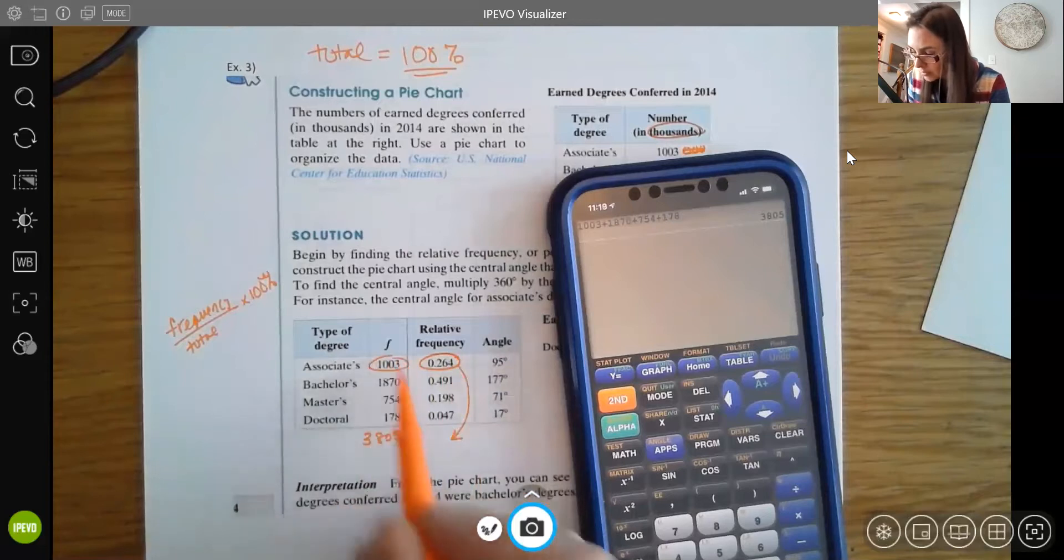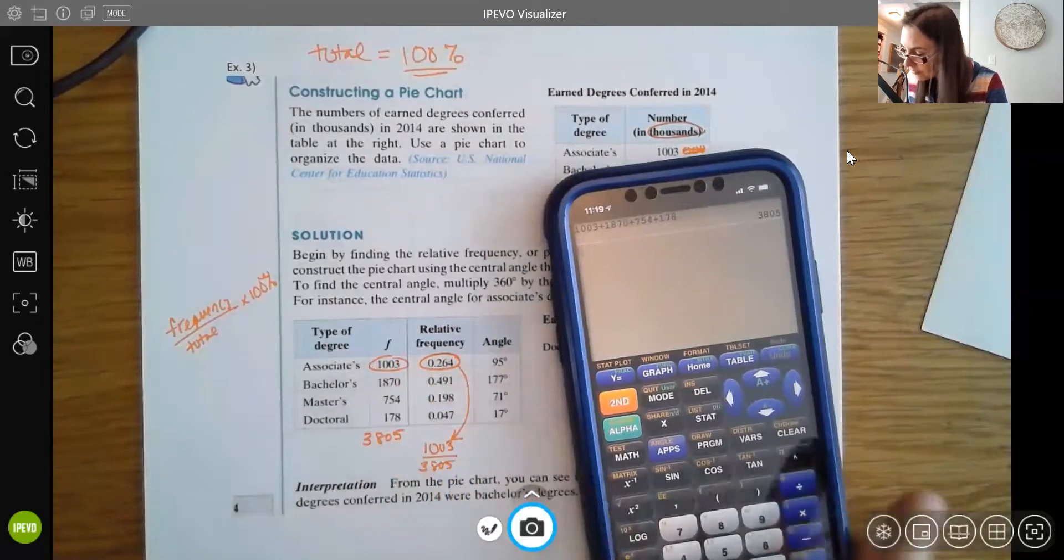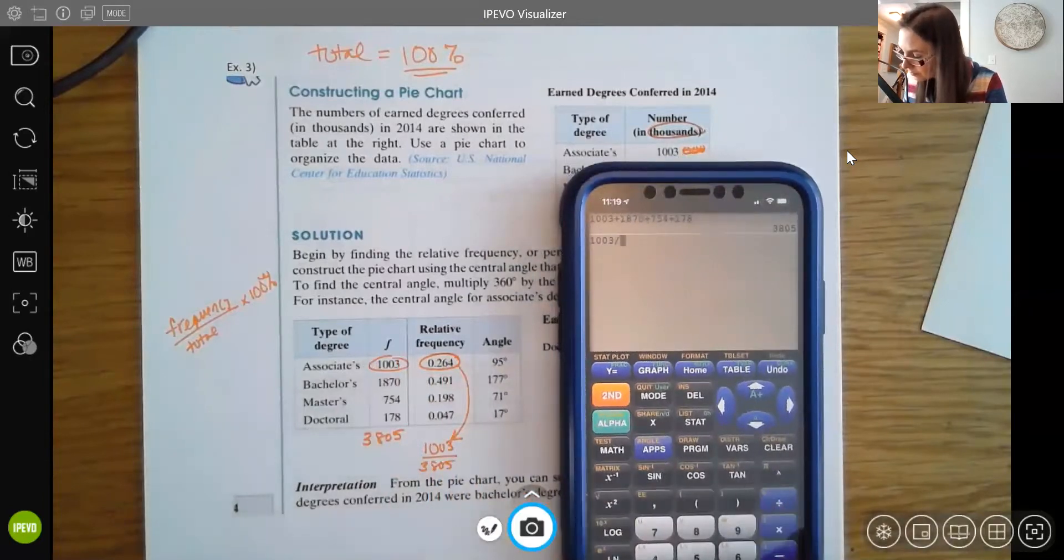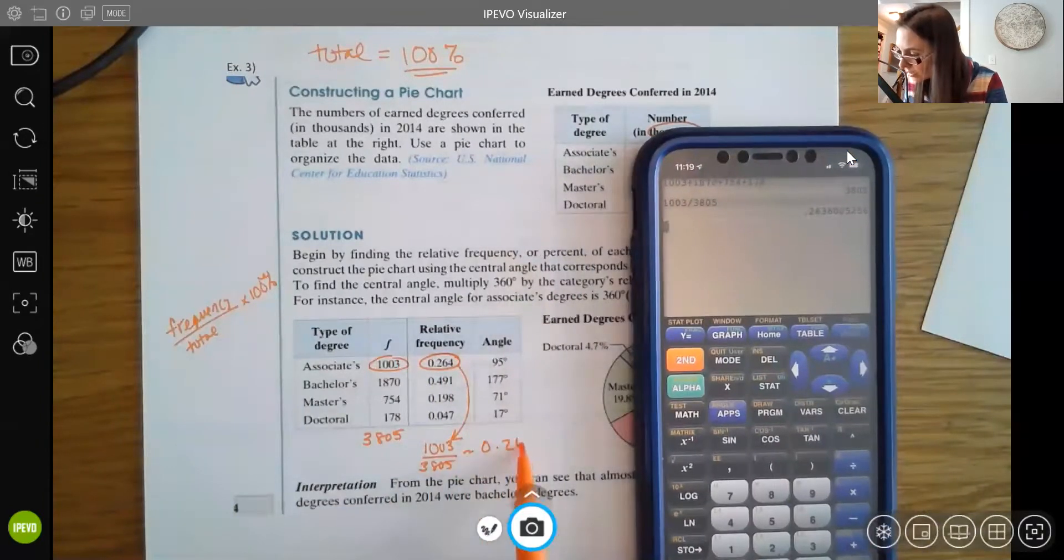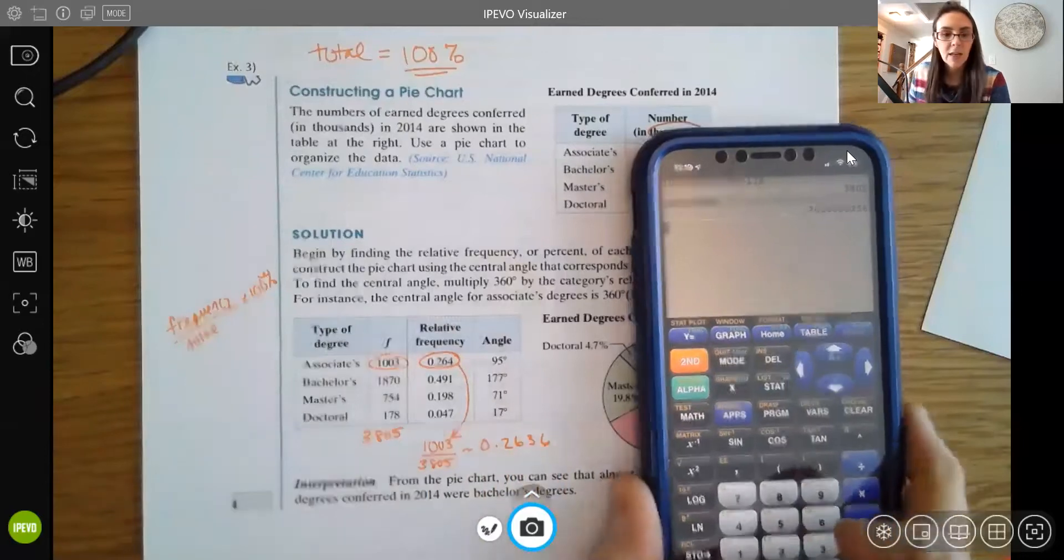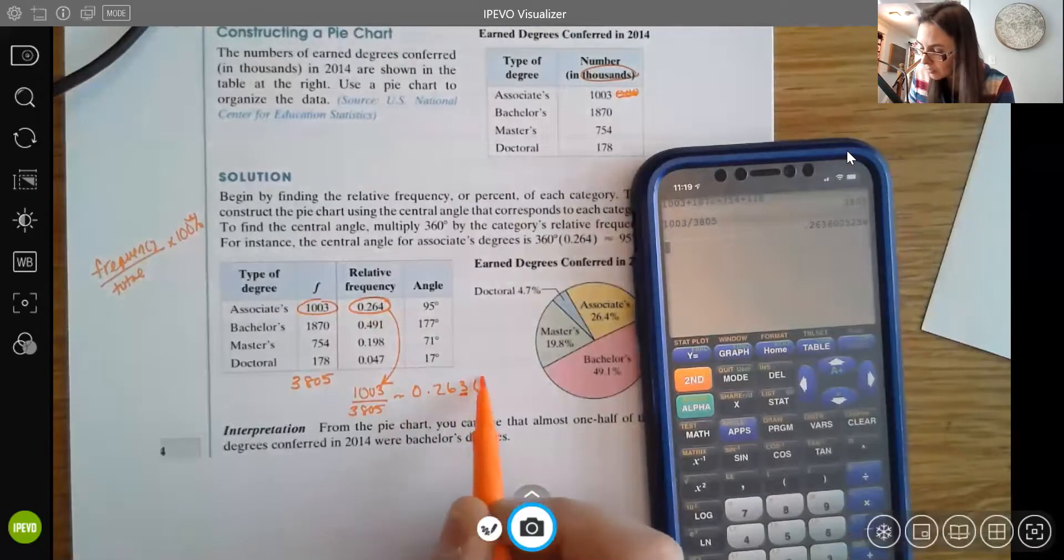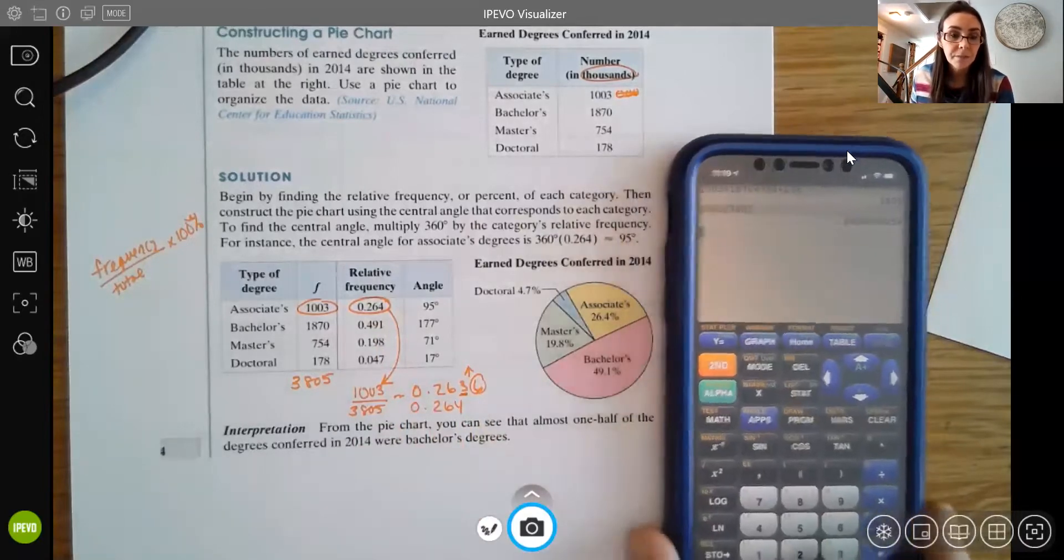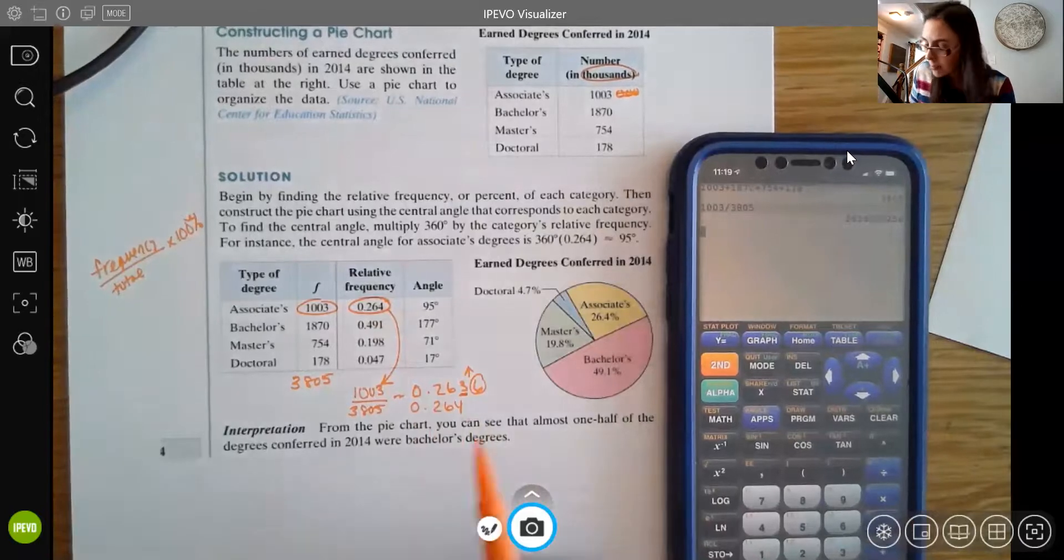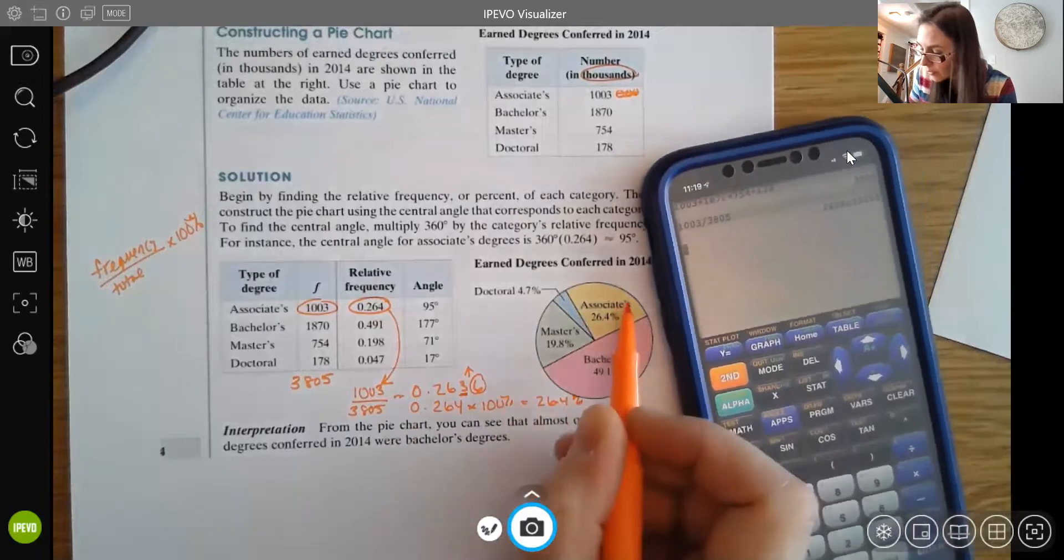So for instance, to get this first relative frequency, what we're going to take is the part, the 1,003, and divide it by that 3,805. And what we get there is 0.2636. And you can see now that they rounded to just three decimal places. So they used here, and then that 6 would bump up that 3. So they're using about 0.264 for your relative frequency.